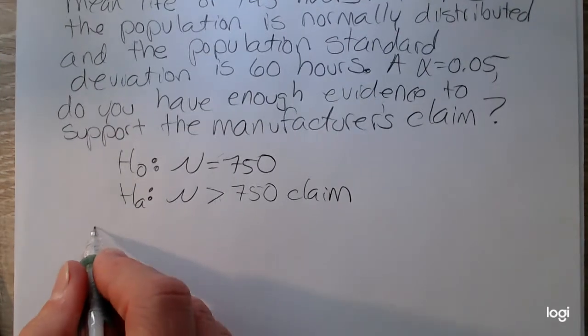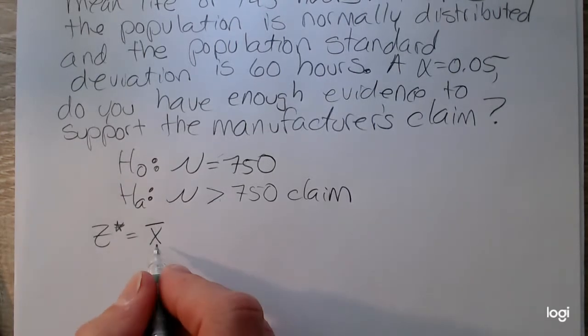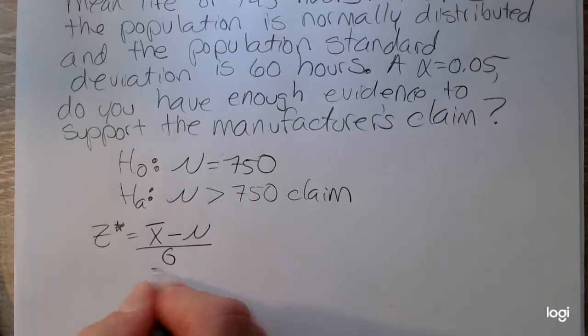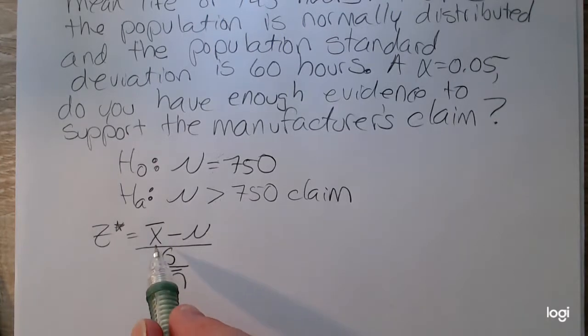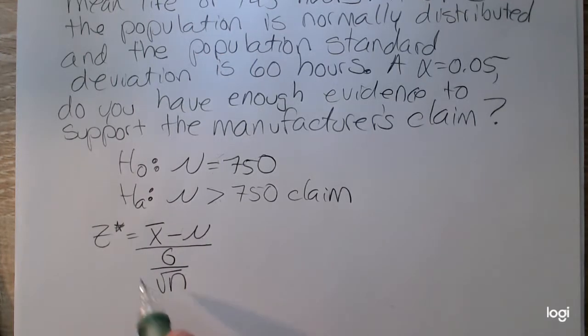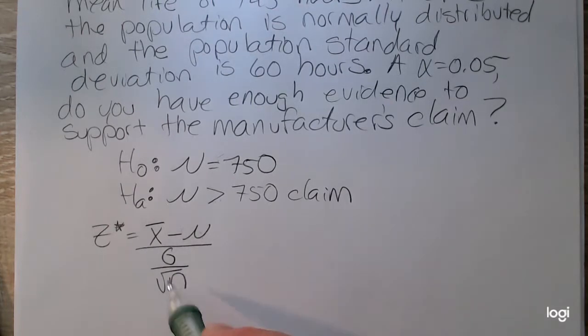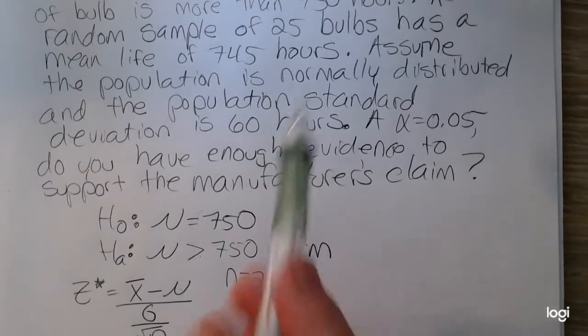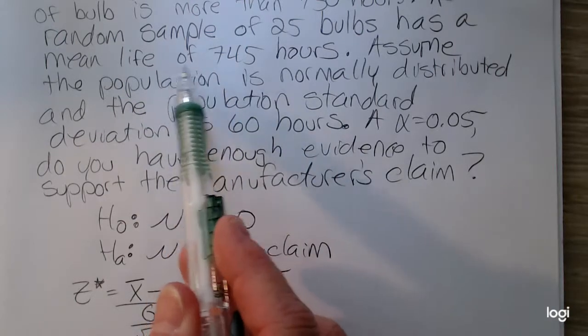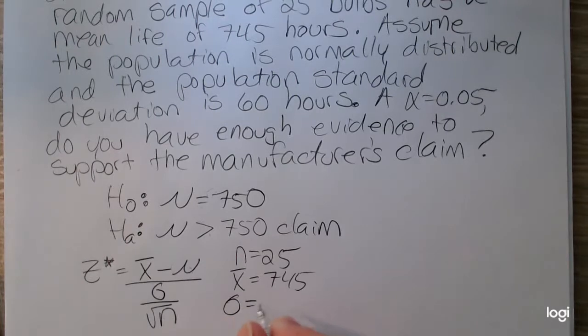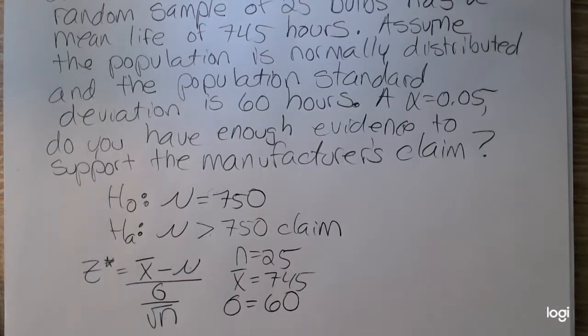The standardized test statistic formula is what we observed from the sample, which will be x-bar, our point estimate, minus the claimed or the hypothesized value, over sigma over the square root of n. We want to determine if what we observe is statistically different enough to warrant rejection of the null from what is claimed. And we want to standardize by dividing by the standard error of the mean from the central limit theorem. Reading the problem again, our sample size is 25, so n is 25. And from that sample, a mean life was found to be 745, so that's x-bar. And we're assuming the population standard deviation, which is sigma, is 60, or 60 hours.